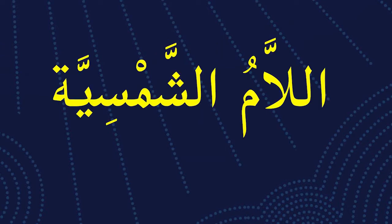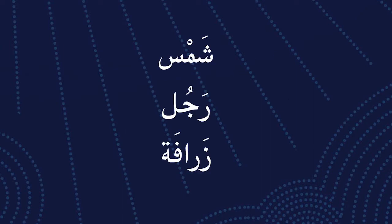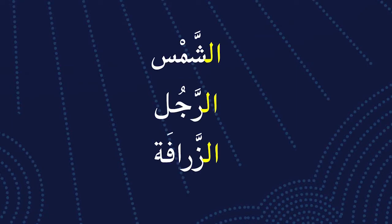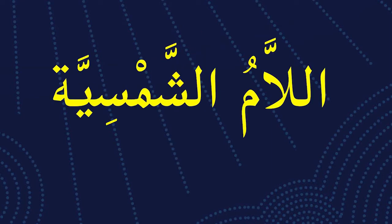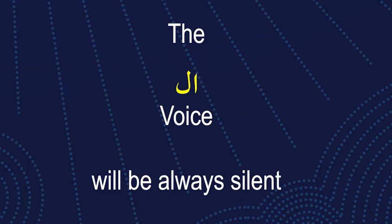Now, al-lamu al-shamsiya. For example: al-shams, al-rajul, al-zarafa. Let us add 'al-' as the definite article: al-shams, al-rajul, al-zarafa. This is al-lamu al-shamsiya.